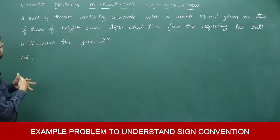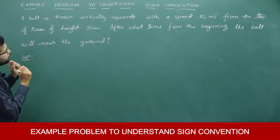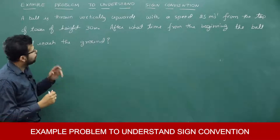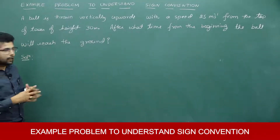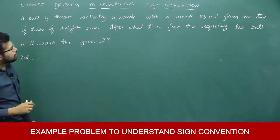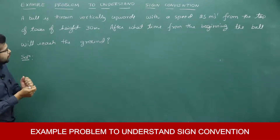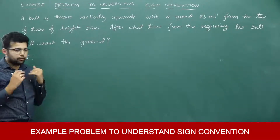I have written a problem here: a ball is thrown vertically upwards with a speed of 25 meters per second from the top of a tower, and the height of the tower is 30 meters. After what time from the beginning will the ball reach the ground?